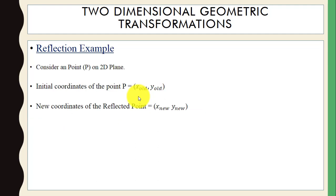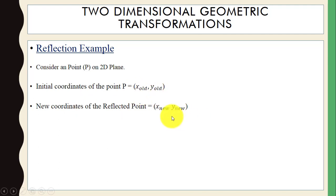For example, here you can see we have a point on the 2D plane. The initial position of this point is denoted with x_old and y_old, and the position of the point after reflection — the new coordinates — is denoted with x_new and y_new.